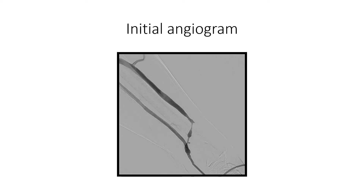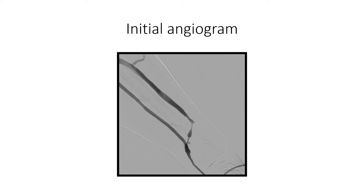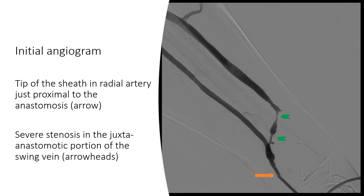Our initial angiogram looked like this. We can see the contrast filling the radial artery as well as the vein, and you can see the stenosis in the swing vein section. The orange arrow here points to the tip of the sheath and the green arrows point to the stenosis in the juxta-anastomotic portion of the swing vein.